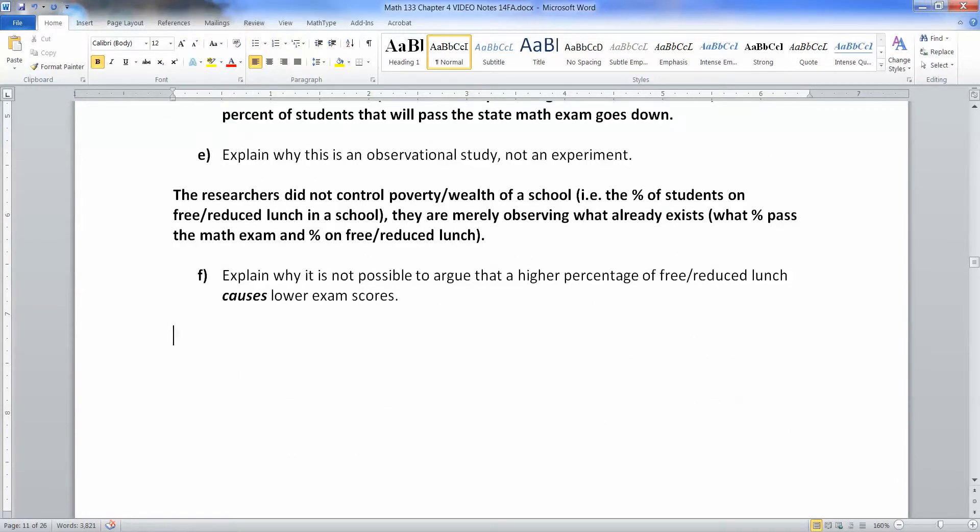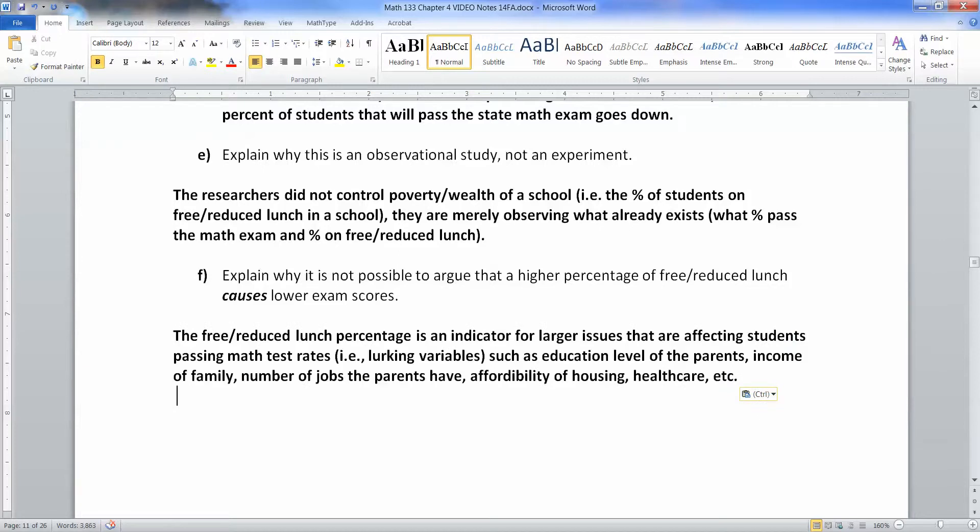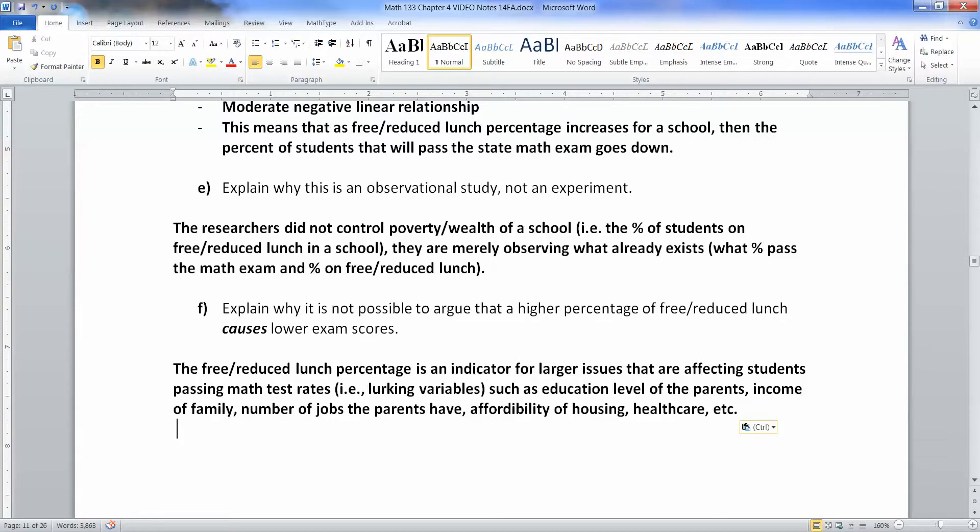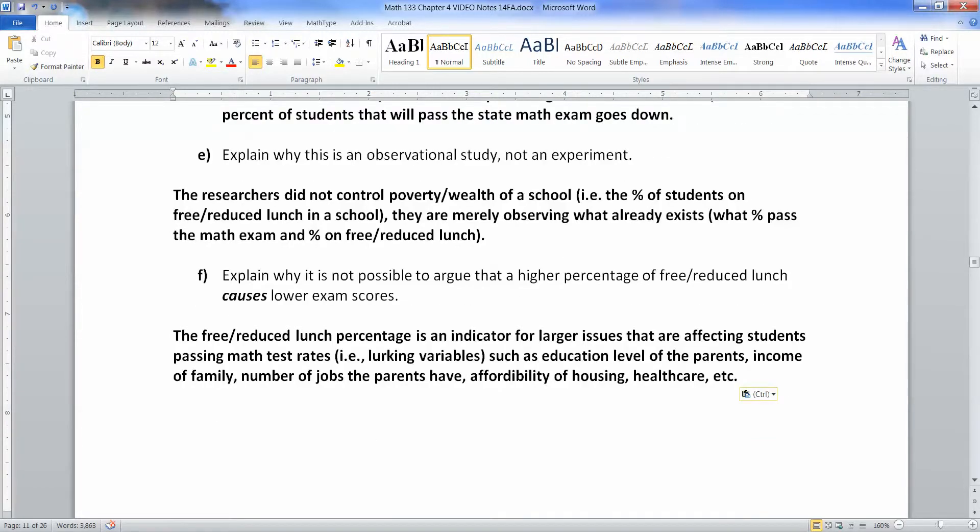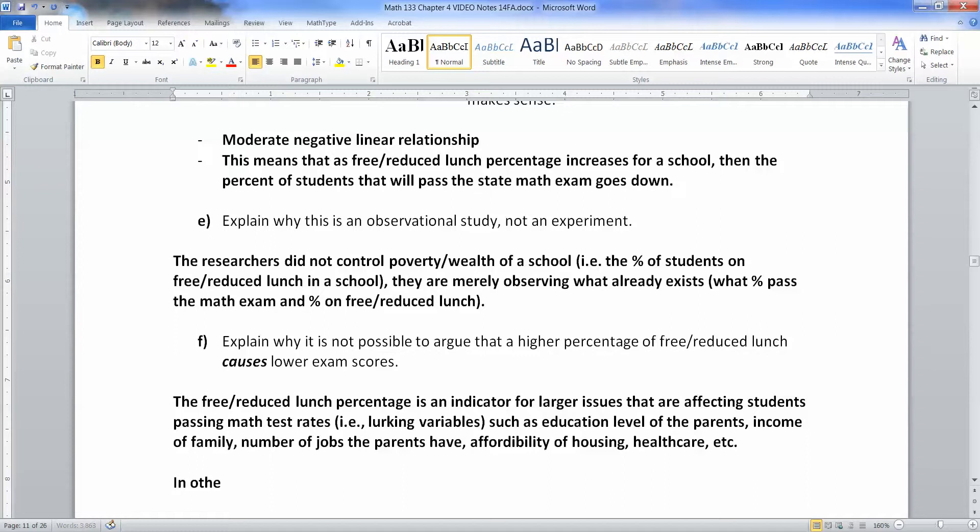But because they're just observing what already occurs, they can't say that free reduced lunch causes lower math scores. They can't say 'hey, this child gets free lunch therefore they will automatically fail.' That's not what this means. It means that the children on free reduced lunch are having something going on that is affecting them that also is affecting their math tests. But the free reduced lunch percentage could be happening for other reasons, and so could the math tests. There are other variables called lurking variables that might be affecting what's going on - namely income level of the parents, education level of the parents, number of jobs, affordability of housing, health care, etc.